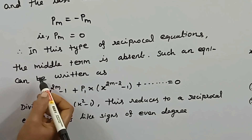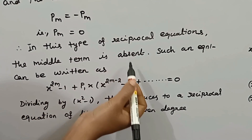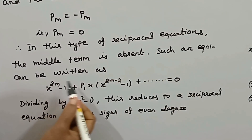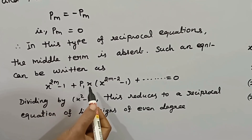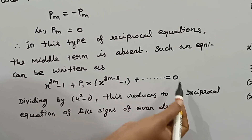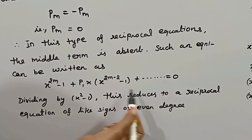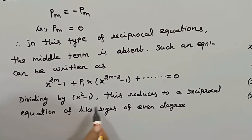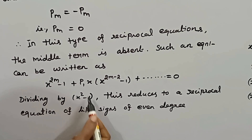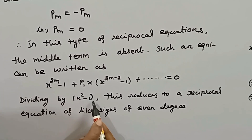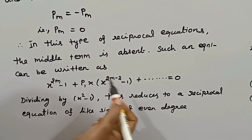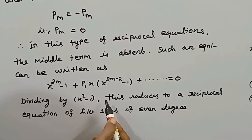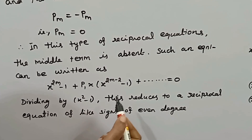In this type of even degree unlike sign reciprocal equation, the middle term is absent — the middle term coefficient is 0. Such an equation can be written with x squared minus 1 as a factor. Dividing by x squared minus 1 reduces it to a reciprocal equation of like sign of even degree.